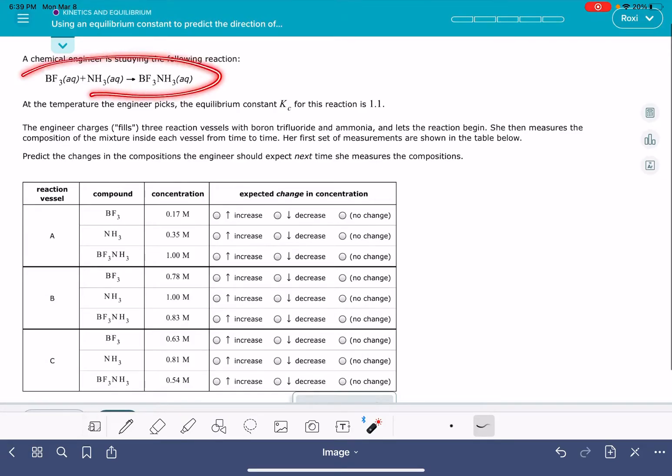In this problem, you'll be given a balanced equation and a value of Kc, and then you're going to be given three different sets of data for that particular equation.